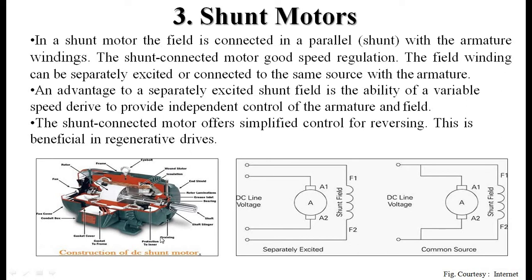A cut-section view of a shunt DC motor is shown here, displaying different components including the armature rotor, shaft, motor casing, and stator windings.